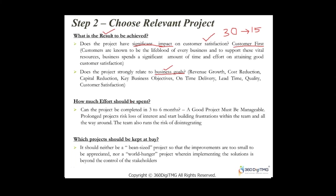How much effort should be spent on a Six Sigma Green Belt project? It should not be more than six months — three to six months maximum, including handover of the improved process to the process owner. A good project must be manageable. Prolonged projects will significantly reduce stakeholder interest levels and build frustration among the team. The team also runs the risk of disintegrating.